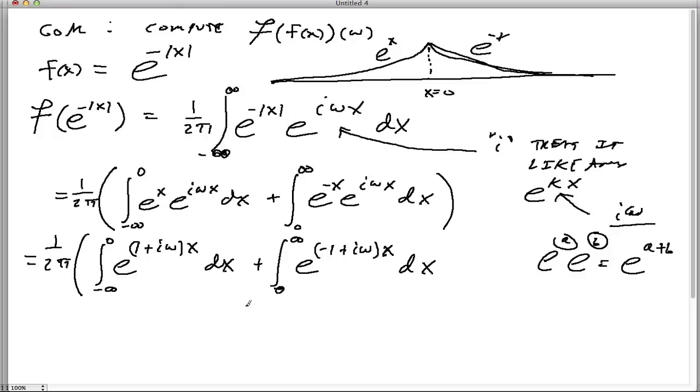And then we'll also go plus 0 to infinity e to the negative 1 plus i omega x. Take that common factor out. So here, what we want to do here is, we're just going to integrate this like we normally would. So what we'll do is we'll consider then this as a constant and take the antiderivative like we normally would. So that's going to be 1 over 1 plus i omega e to the 1 plus i omega x. And put on the limits of integration, 0 to negative infinity. And we'll put that 1 over 2 pi way out front like that.